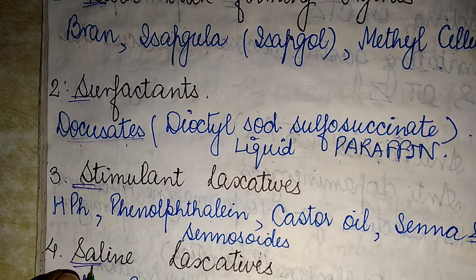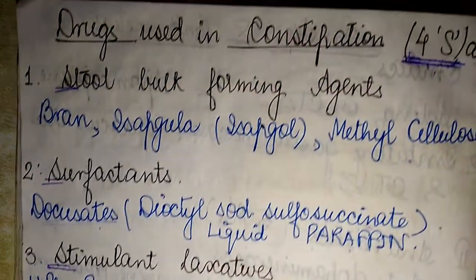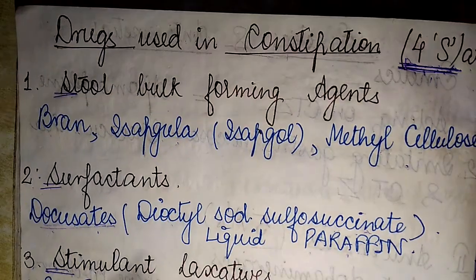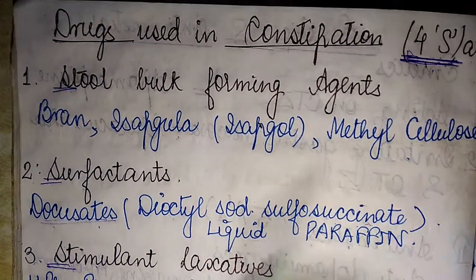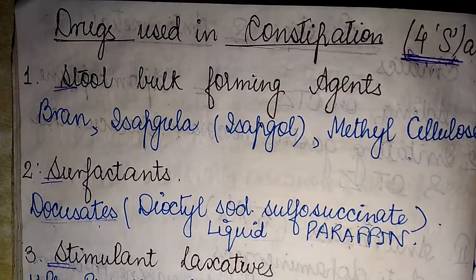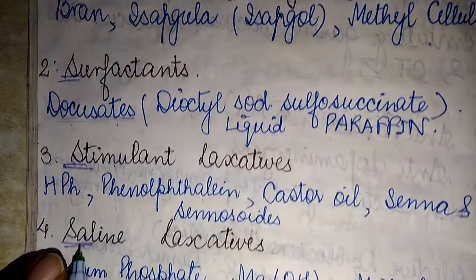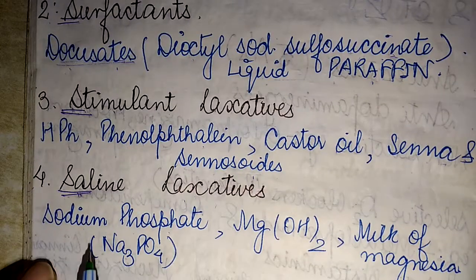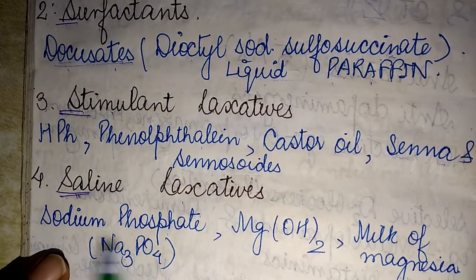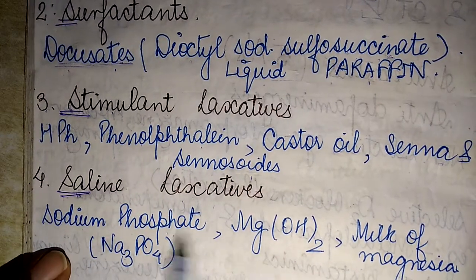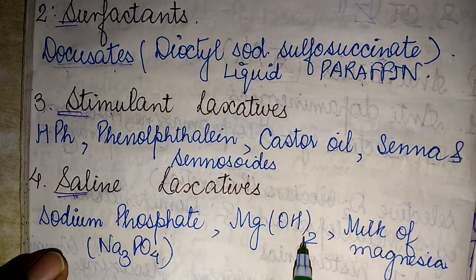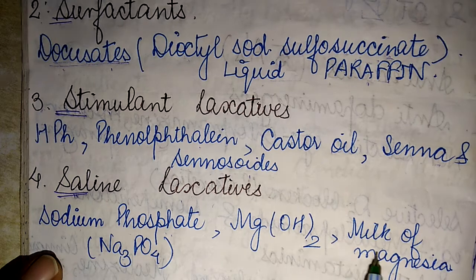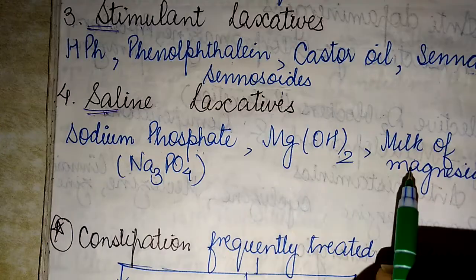The fourth S stands for the saline laxatives, which includes sodium phosphate, magnesium hydroxide, and milk of magnesia.